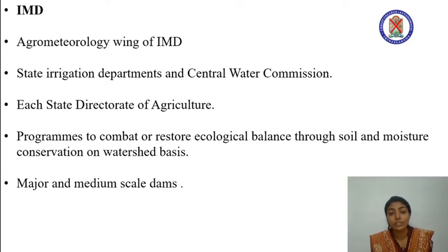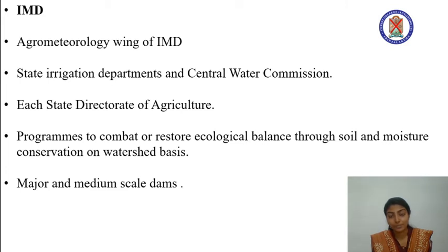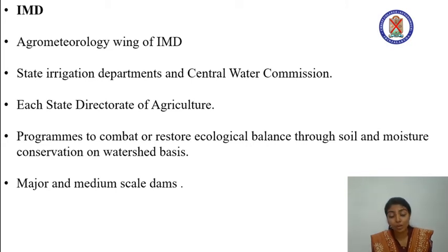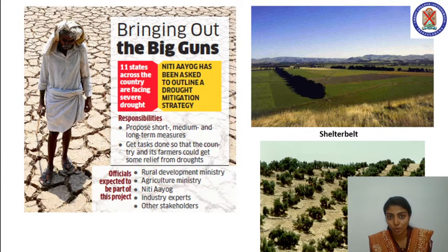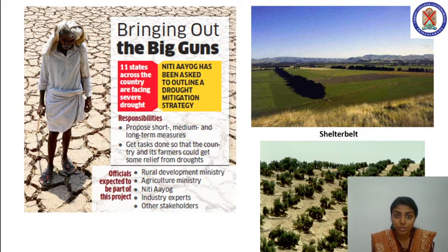The rainfall prediction data as well as crop condition information is received by the state agricultural departments and compiled at the national level. In certain cases, medium and major scale dams are constructed to ensure irrigation as well as drinking water supply to mitigate drought. Many other programs are also done to restore ecological balance through soil moisture conservation on a watershed basis. Other measures like constructing shelter belts, windbreaks, and cultivating drought-resistant crops can also mitigate drought to a large extent.